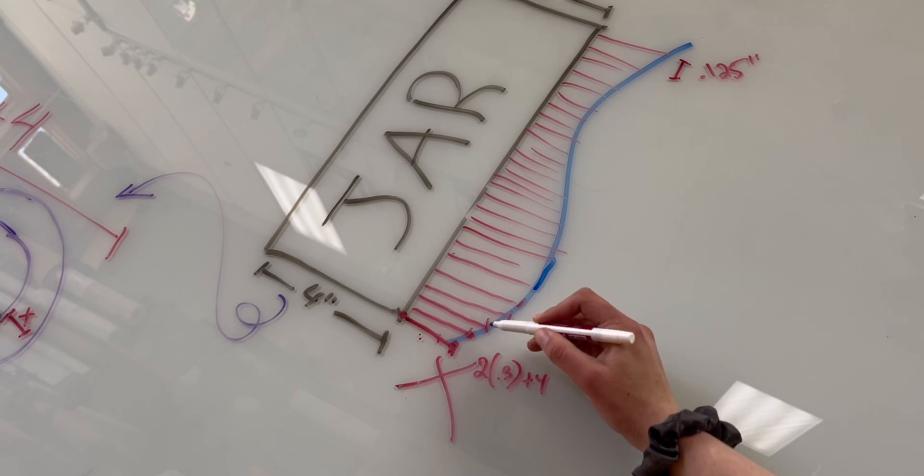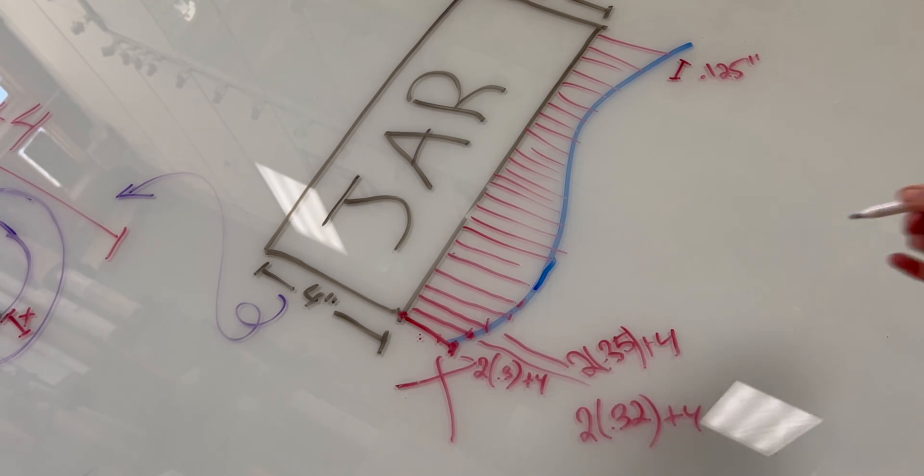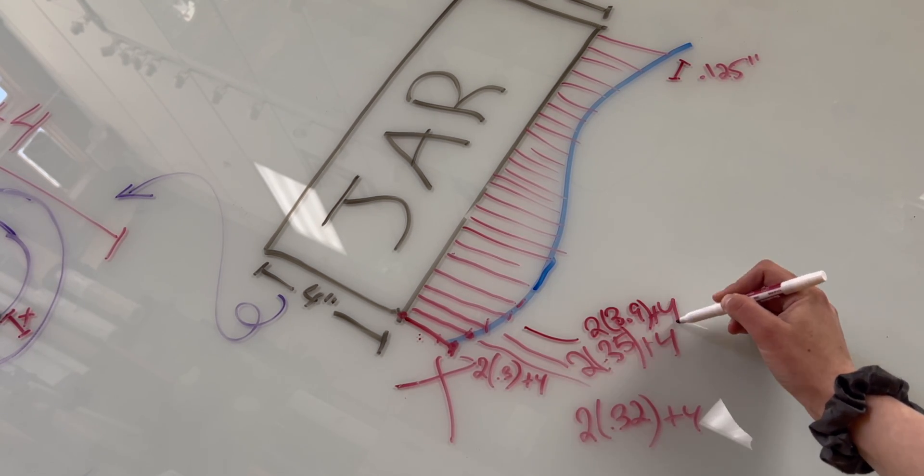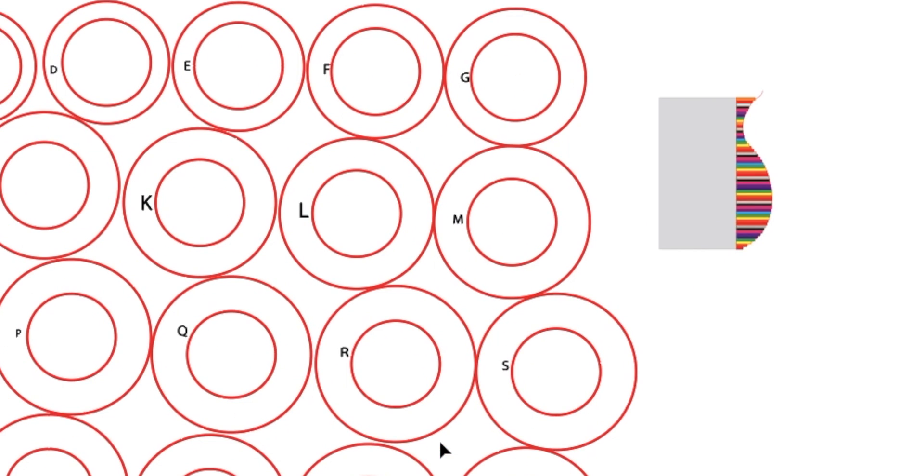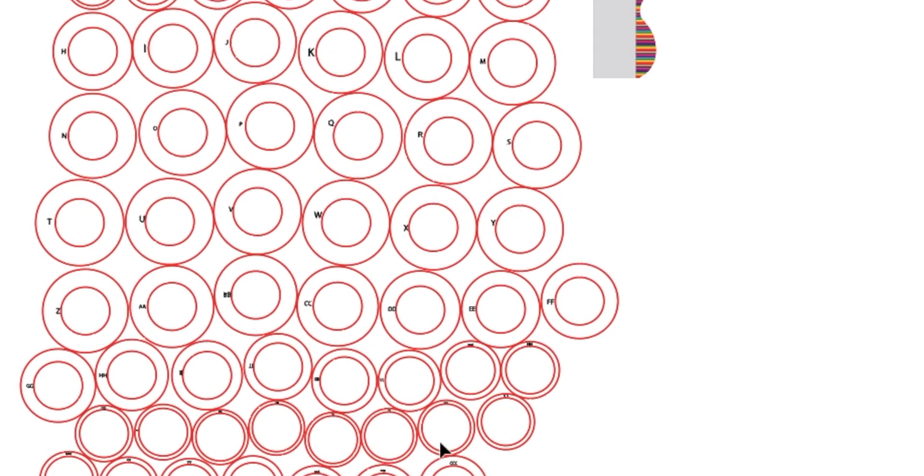I did this on the whiteboard first just to get my thoughts out there and have a clear idea of the process I wanted to use before repeating all of this on the computer to make the actual patterns for all the discs. Here they all are. I lettered them just so that I'd be very sure I had them in the right order, and I'm ready to laser cut them.